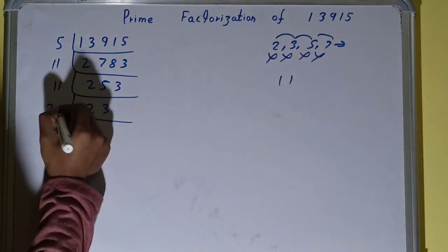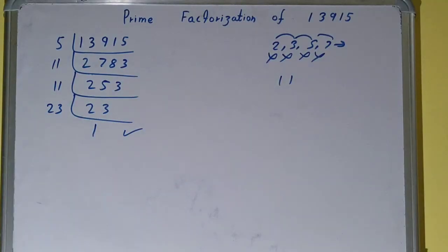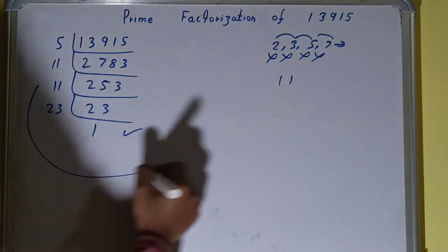So to divide this 23, you need 23 on the left-hand side, and when you'll do so, you'll be getting 1. Once you get 1, the work is done.